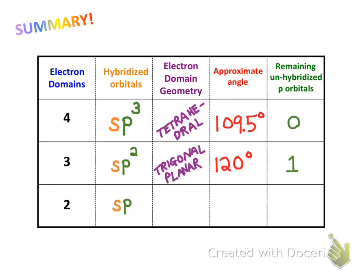Lastly, two electron domains gives sp hybridized orbitals, producing a linear shape with an approximate angle of 180 degrees. Since only one p orbital was used in hybridization, we're left with two unhybridized p orbitals that may go on to make two double bonds or a triple bond.